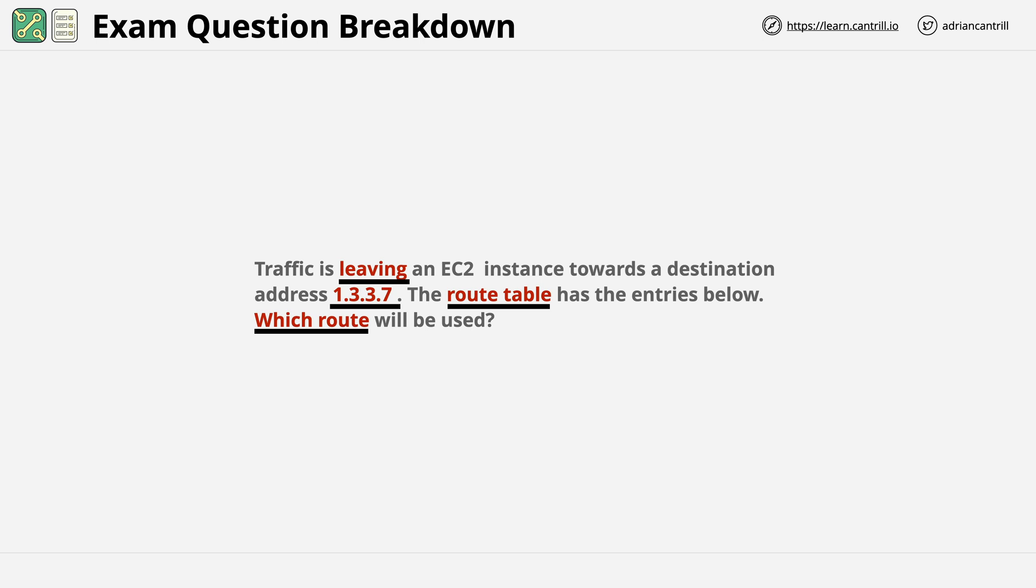I also spotted the address which the traffic is headed to. That's important. So 1.3.3.7. And I can also see that route table is mentioned, as well as the question asking which route is used. Why does any of this matter? Well, remember route tables can have multiple routes. Do you remember how AWS selects between multiple routes?